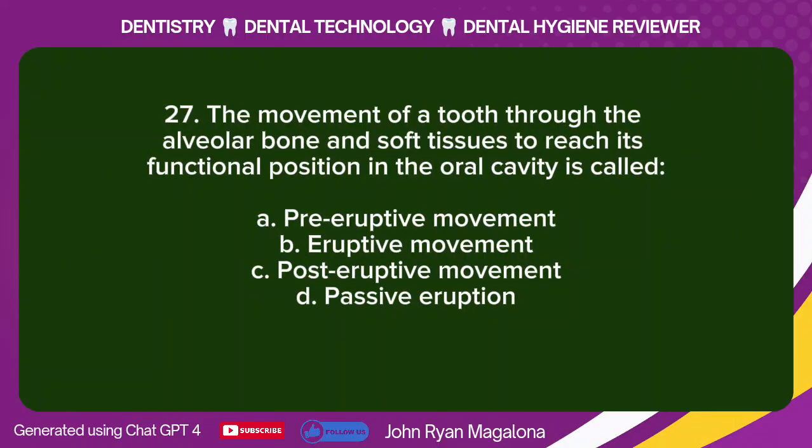Question 27: The movement of a tooth through the alveolar bone and soft tissues to reach its functional position in the oral cavity is called: A. Pre-eruptive movement. B. Eruptive movement. C. Post-eruptive movement. D. Passive eruption. Answer: B. Eruptive movement.